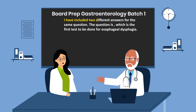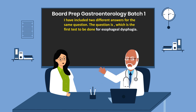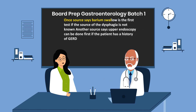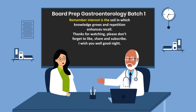I have included two different answers for the same question: which is the first test to be done for esophageal dysphagia? One source says barium swallow is the first test if the source of dysphagia is not known. Another source says upper endoscopy can be done first if the patient has a history of GERD. Remember, interest is the soil in which knowledge grows, and repetition enhances recall.